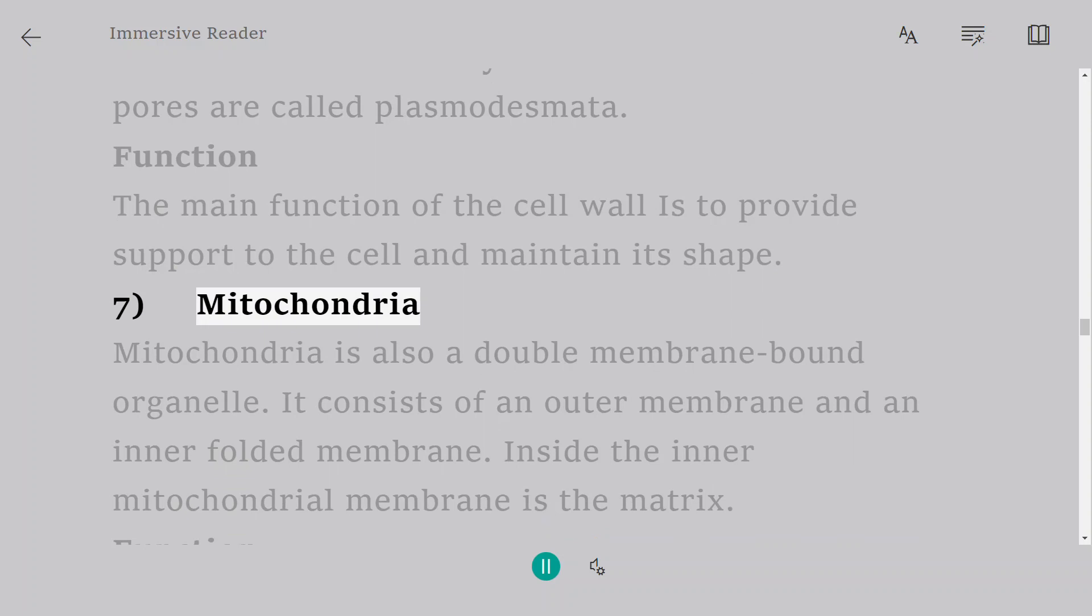7. Mitochondria. Mitochondria is also a double membrane-bound organelle. It consists of an outer membrane and an inner folded membrane. Inside the inner mitochondrial membrane is the matrix.